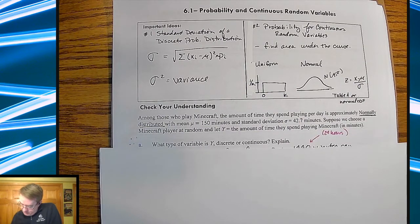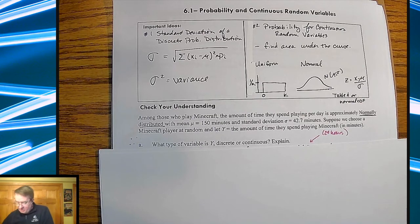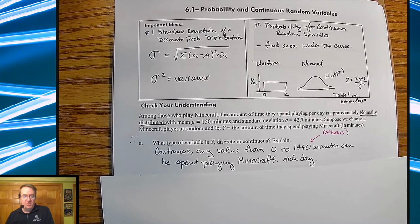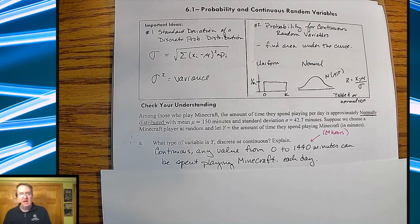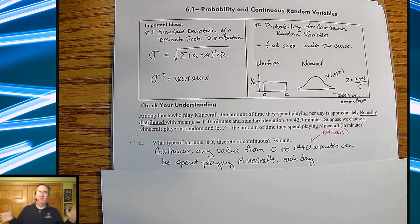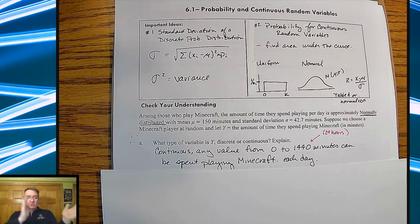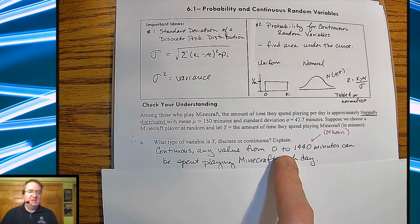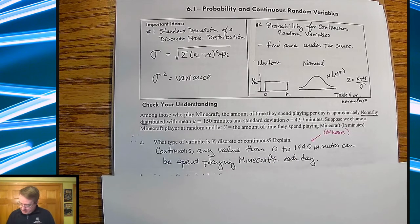All right. So for the first question, what type of variable is Y, discrete or continuous? Explain. It's going to end up being continuous. Why? Because you can spend any amount of time between 0 and 1440 minutes, which is 24 hours. And you can always go a little bit less or a little bit more than that. So because of that, it's continuous. Somebody can always play a little bit less than you.